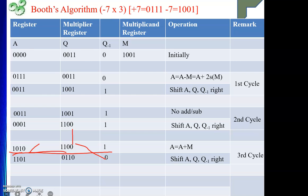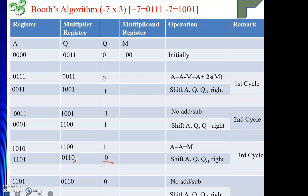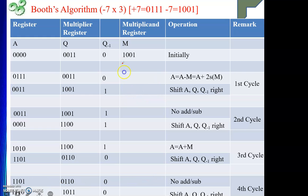For the fourth cycle, we check the two consecutive bits — both are 0, which are the same — so no addition or subtraction. We simply copy the current values. Then we perform arithmetic shift right: A becomes 1 1 1 0, Q shifts to 1 0 1 1, and Q minus one becomes 0. At the end of the fourth cycle, the content of A and Q together is 1 1 1 0 1 0 1 1.